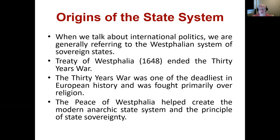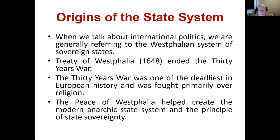When we talk about an anarchic state system, we're talking about a state system where you have different countries with territoriality and sovereignty. When we talk about anarchy, we mean there's no central government above them — above these states, there's no world government that can police them. It doesn't mean chaos — we'll return to anarchy later — it just means you've got these different states operating with control over their own territory. They have relations with other states, but there's no world government above them. If you're having interactions with another person in Canada, there's a government you can go to; if states have a conflict in international politics, there's no government they can go to above them.